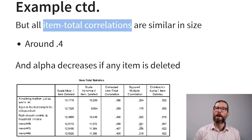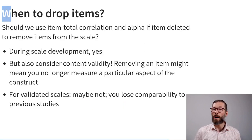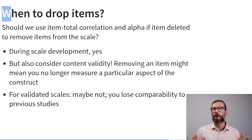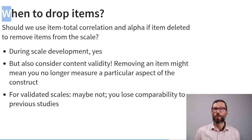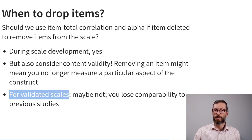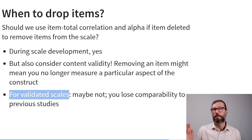The scale has low reliability, but no single item appears problematic — an alternative explanation is that measurement error is simply high for all items. When deciding whether to drop items, consider: if you're developing a new scale, item-total correlation and alpha-if-deleted can be useful criteria. But also consider content validity — removing an item may mean you no longer measure a particular aspect of the construct. And if working with previously validated scales, removing items costs comparability with prior research.